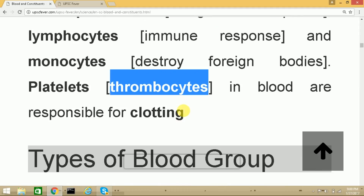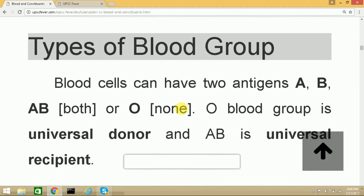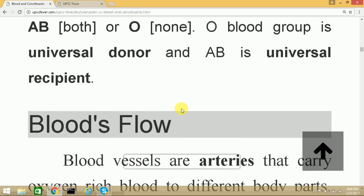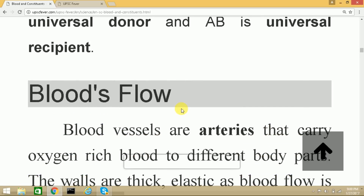The next topic is types of blood groups. There are four main types: blood cells can have four antigens — A, B, AB, and O. The O negative blood group is known as the universal donor, whereas AB positive is known as the universal recipient.